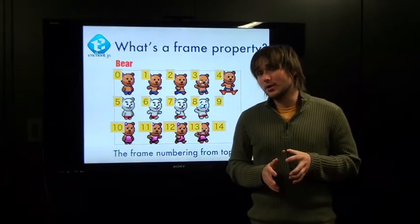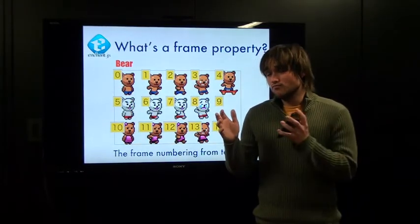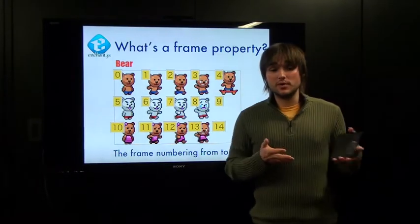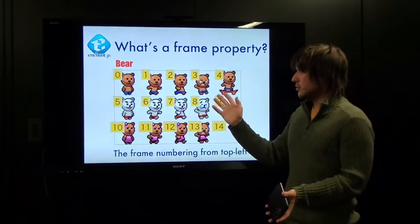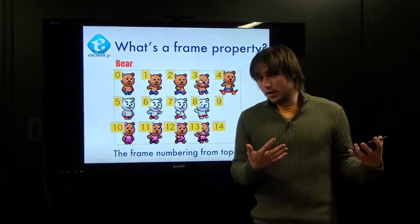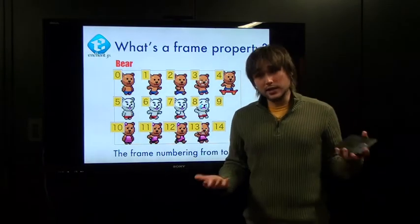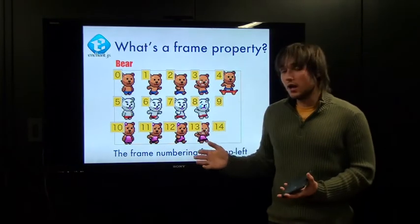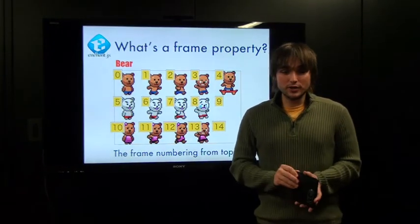So, if we create this bear, we don't designate a frame number. It will always take the one in the top left-hand corner, frame zero. So, we have your standard bear, just brown bear, just chilling out, right there. At any time, we could say bear.frame equals three, and then he would be a crying bear, or bear.frame equals five, and it's a white bear, or bear.frame equals ten, and then you have a lady bear. That's all you have to do to change which frame you're referencing on this sprite sheet.